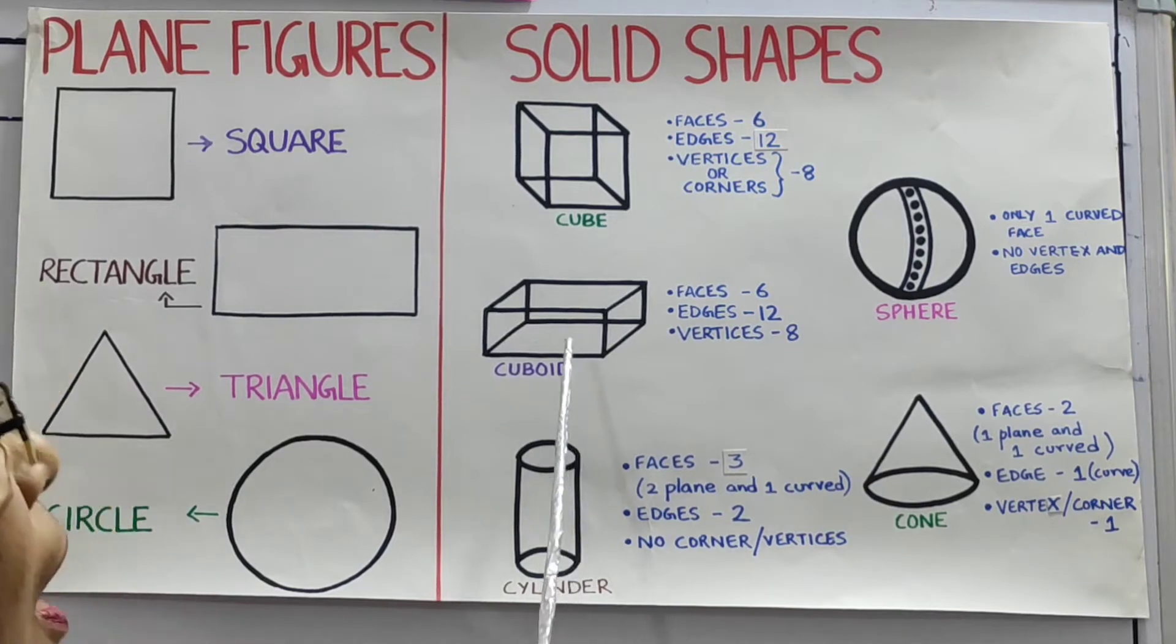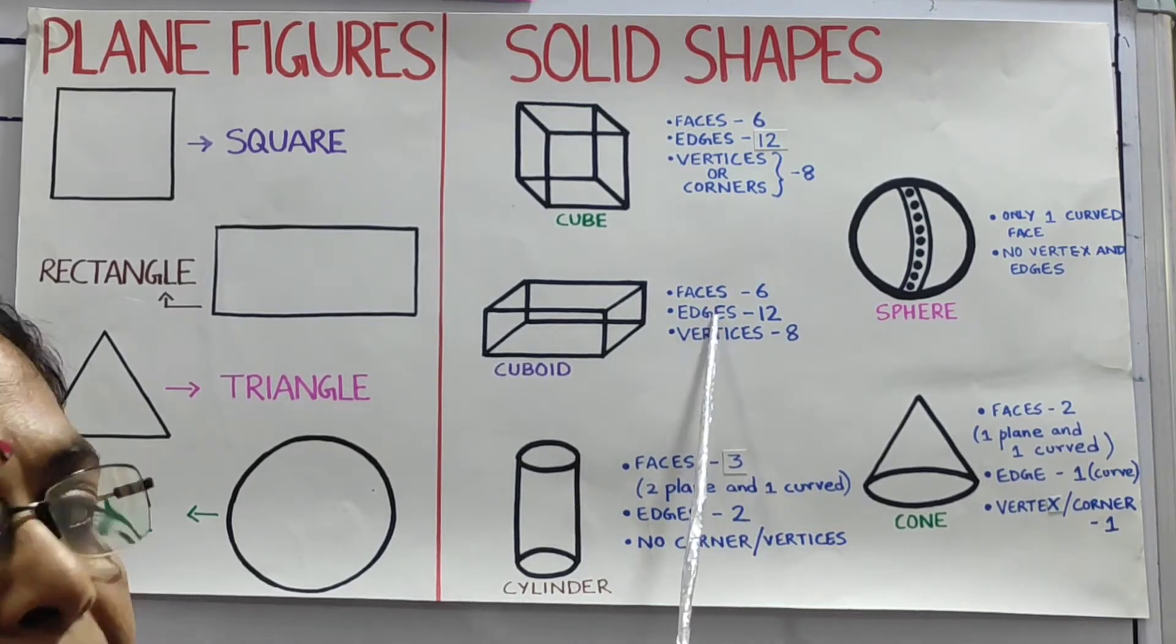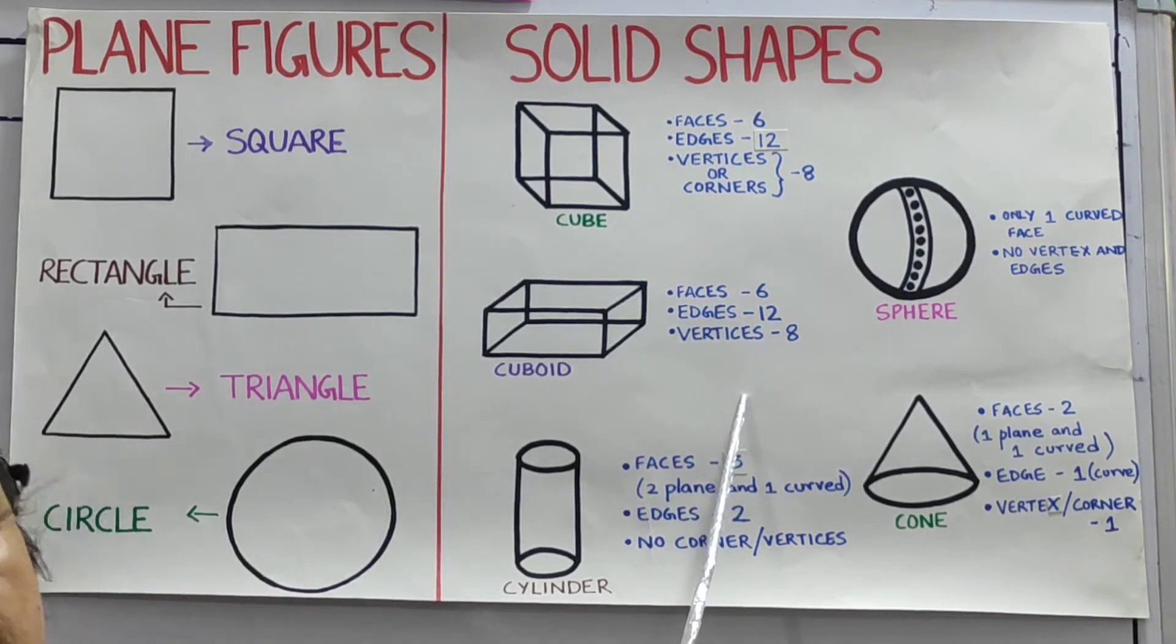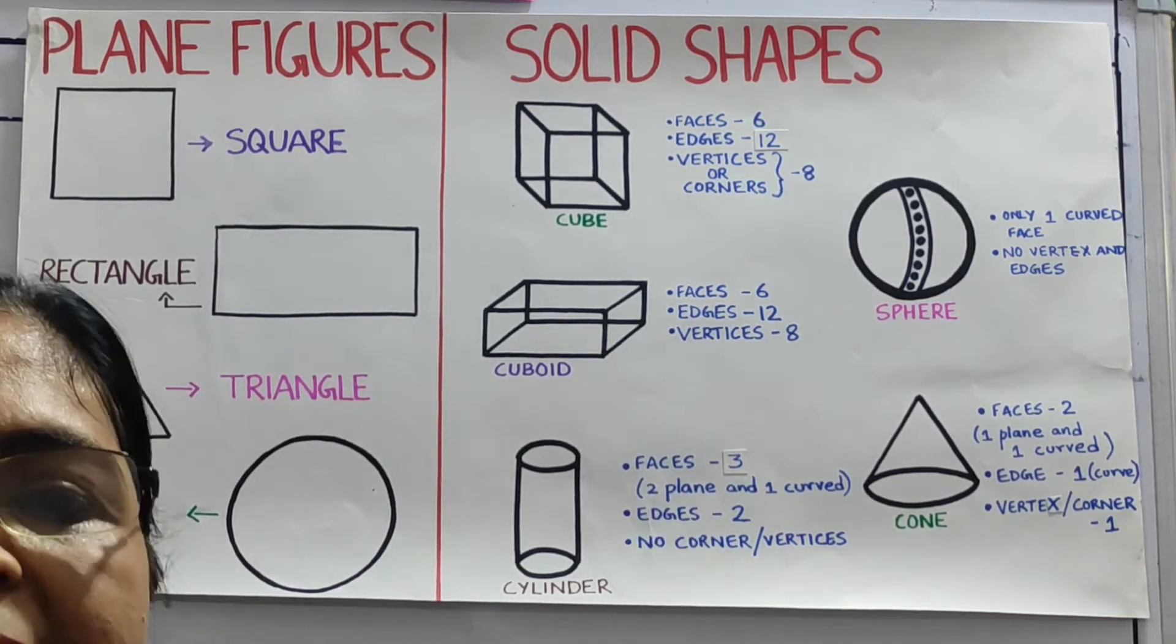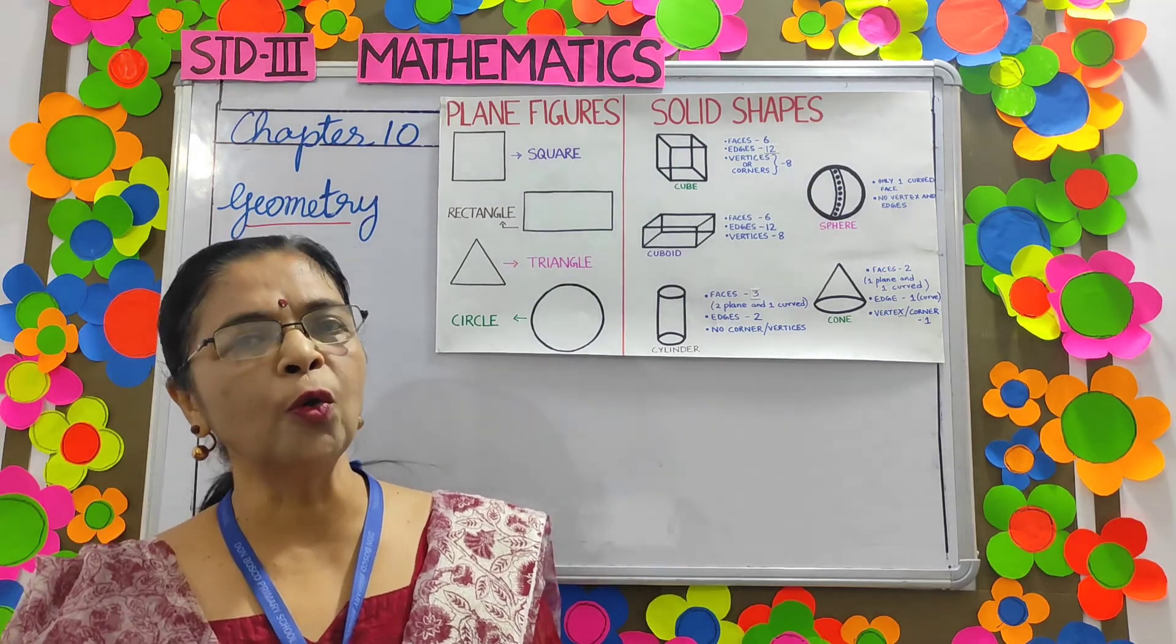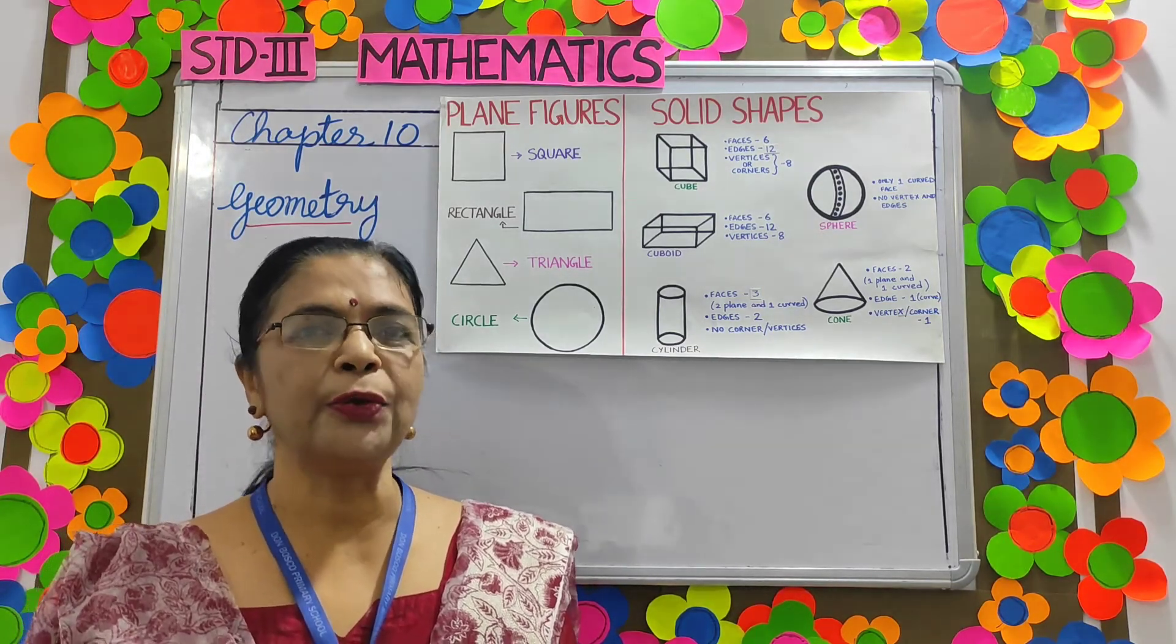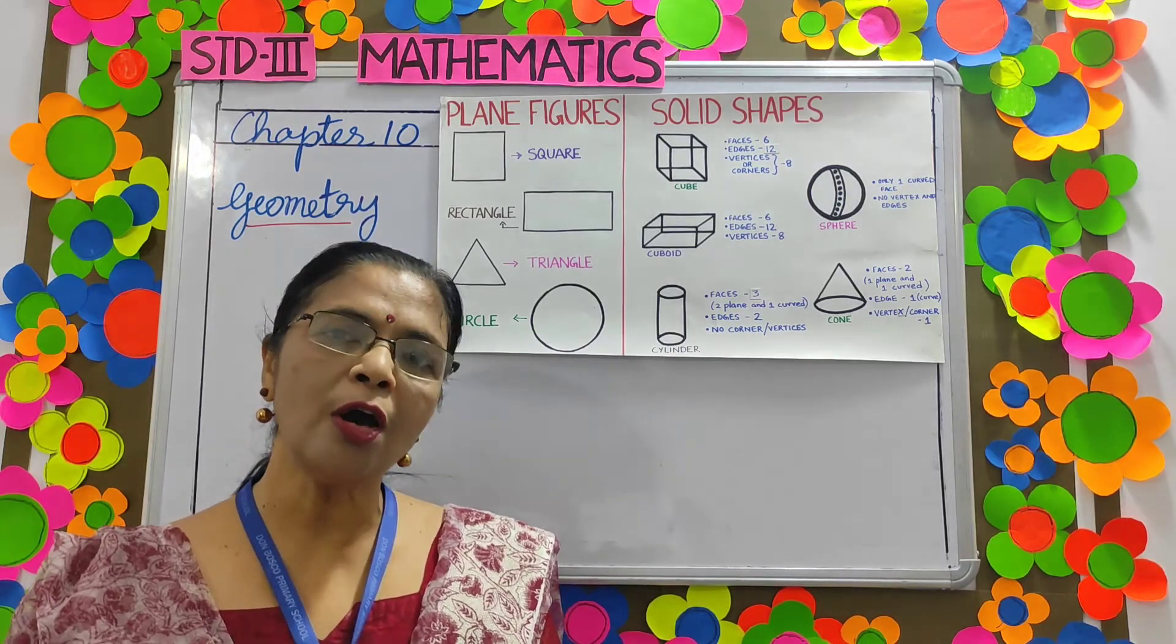Now next one is a cuboid. The same as a cube it has six faces, twelve edges and eight vertices. Each face of a cuboid is rectangle. Now children, what is the difference between a cube and a cuboid? In a cube all the six faces are equal or identical. But in a cuboid only opposite faces are identical or equal.